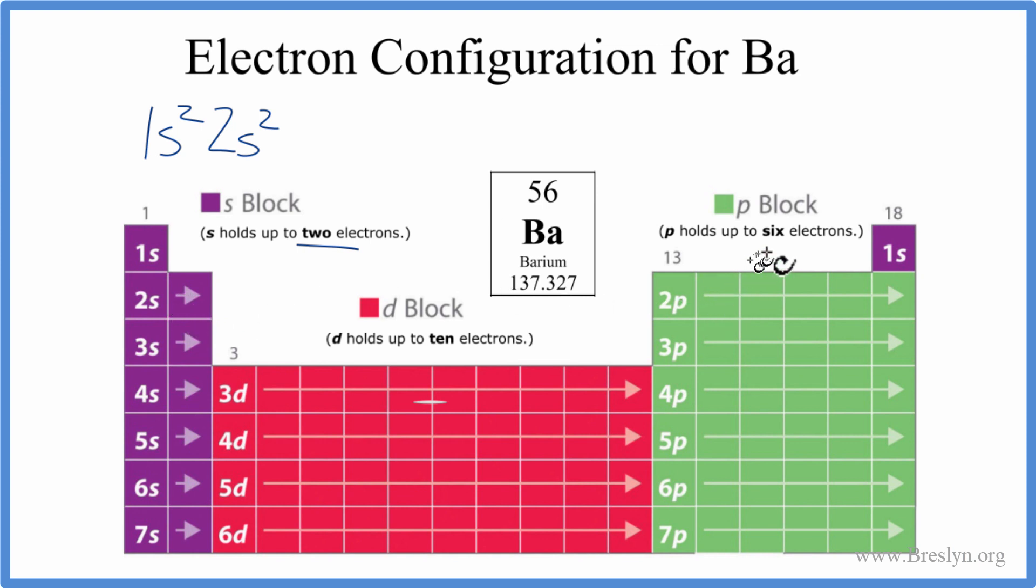So 2s, 2p, p can hold up to 6, so we'll put 2p6, then we go to 3s2, 3p6 from 3p.